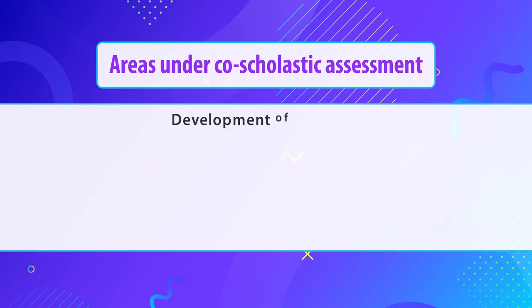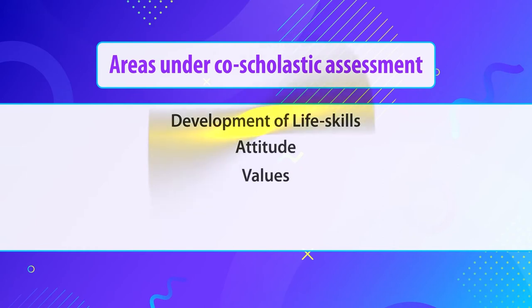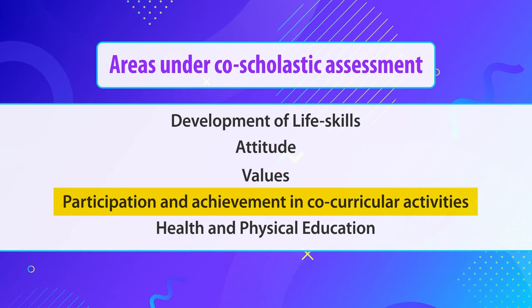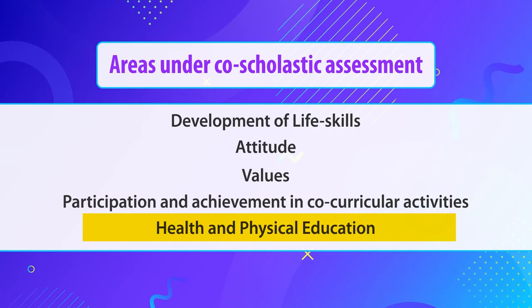I want to quote two documents — one issued by NCERT and one released by CBSE around 2010–2011 — which discuss various parameters, tools, and methods for co-scholastic assessment. Generally, the areas covered under co-scholastic assessment are life skills, attitude, values, participation and achievement in co-curricular activities, and health and physical education — all activities not directly linked to textbook content, but essential for a learner's development.